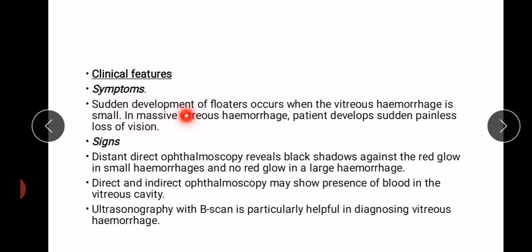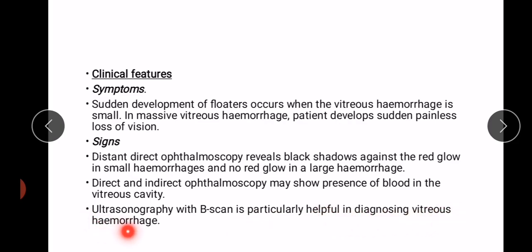Symptoms: sudden development of floaters occurs when the vitreous hemorrhage is small; in massive vitreous hemorrhage, the patient develops sudden painless loss of vision. Signs: distant direct ophthalmoscopy reveals black shadows against the red glow in small hemorrhages and no red glow in a large hemorrhage. Direct and indirect ophthalmoscopy may show blood in the vitreous cavity, and B-scan ultrasonography is particularly helpful in diagnosing vitreous hemorrhage.